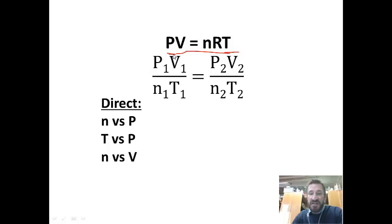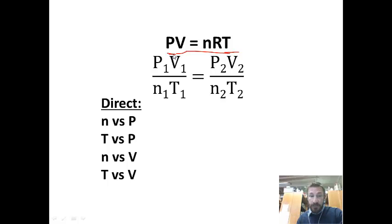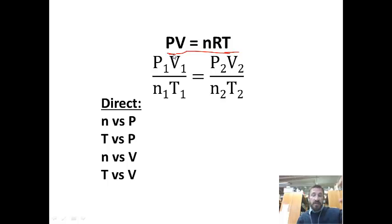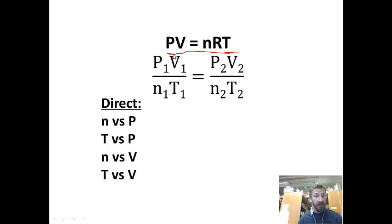There's one more direct relationship in this formula: temperature and volume. Volume is flexible, so we don't have a rigid container — it's something like a piston or a balloon — and pressure is constant, so nothing extra is pushing down on it. If you have a balloon and heat it up, it gets bigger and bigger, or cool it down and it gets smaller. The number of moles is constant in the closed container, and pressure is constant because it can expand or contract. That's another direct relationship.